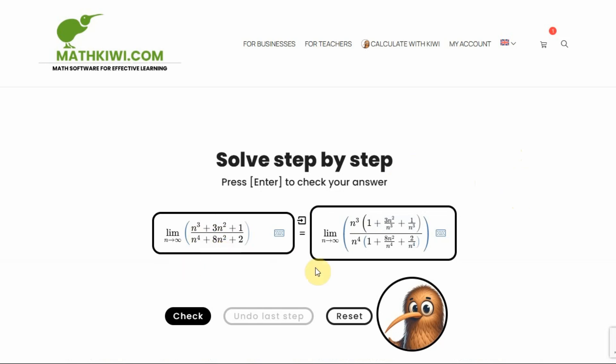Right? Do you understand? I didn't do anything here. I just factored out from these three terms on top in the numerator n to the third power, and at the bottom from these three terms, I factored out n to the fourth power, obtaining something like this.